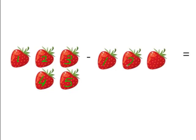So now we have to cross off the three at the end to the ones at the beginning. So one, two, three. So what we have left are two strawberries.